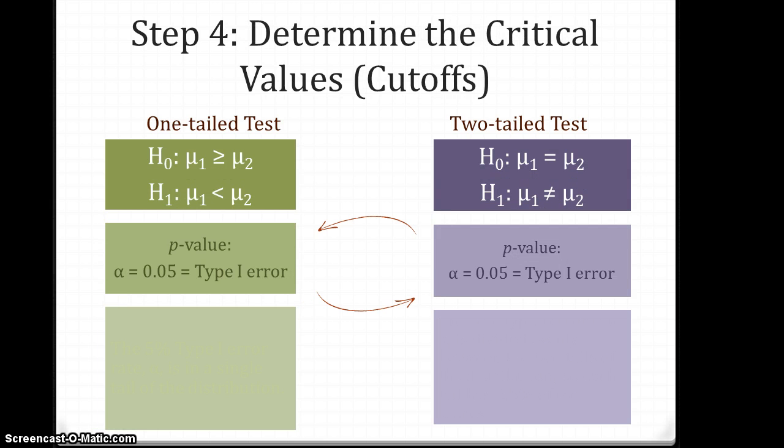Here we've restated these different hypotheses in symbolic form. The next place we have to go—step three was just about what are the characteristics of the comparison distribution, and that does not change when we change the nature of our hypothesis test from a two-tailed test to a one-tailed test.